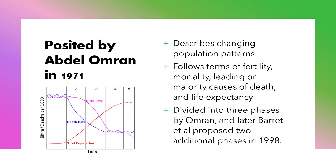Epidemiological Transition Theory, otherwise known as the Epidemiologic Transition Model, was posited by Abdel Omran in 1971. It describes changing population patterns in terms of fertility, leading causes of death, mortality, and life expectancy.